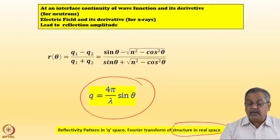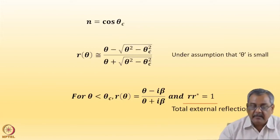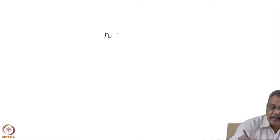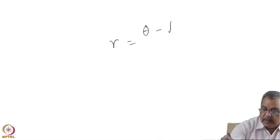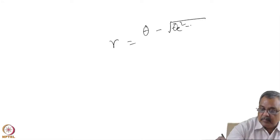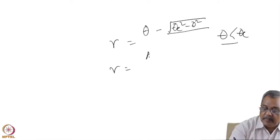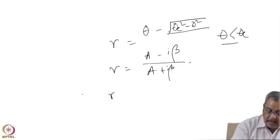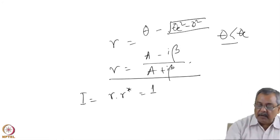Using continuity of the wave function at the interface, and taking n ≈ cosθ, I consider two cases. When θ < θc, the reflection amplitude r = (θ − √(θc² − θ²))/(θ + √(θc² − θ²)), and since θc² − θ² is positive, the term under the square root is imaginary. So r takes the form (a − iβ)/(a + iβ).